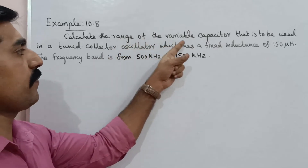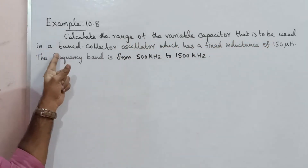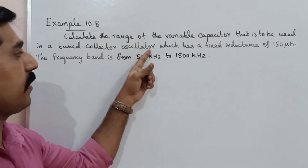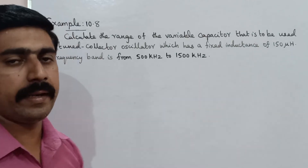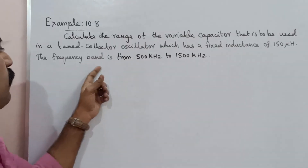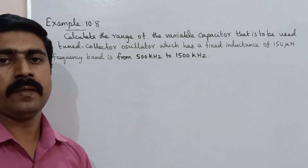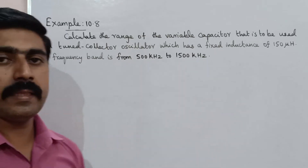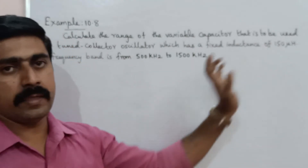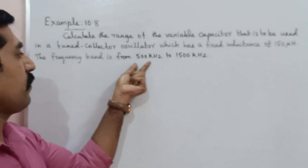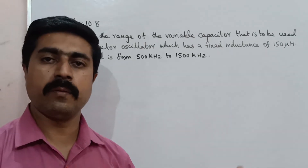Calculate the range of the variable capacitor that is to be used in a tuned collector oscillator which has a fixed inductance of 150 microhenry. The frequency band is from 500 kilohertz to 1500 kilohertz. We have the inductance and self-inductance value, and frequencies of 500 kHz and 1500 kHz to find the capacitance range.